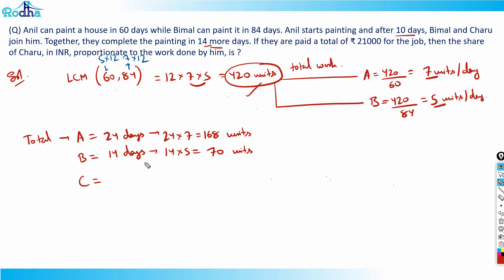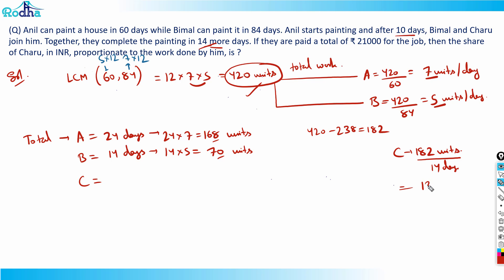The rest of the work is done by C in 14 days. 168 + 70 = 238, and 420 − 238 = 182 units. So C has done 182 units of work in 14 days, meaning C's efficiency is 182 ÷ 14 = 13 units per day. C worked for 14 days at 13 units per day, giving 14 × 13 = 182 units.